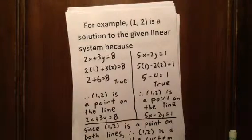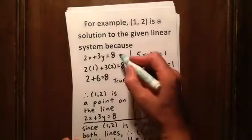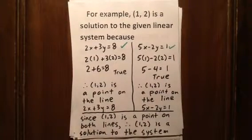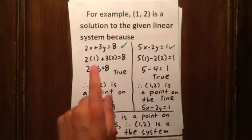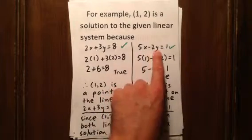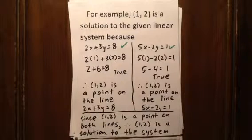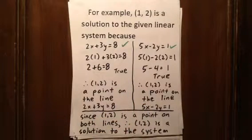For example, (1, 2) is a solution to the given linear system. Recall the system had two equations: 2x plus 3y equals 8 and 5x minus 2y equals 1. To show that (1, 2) is a solution, we plug in 1 for x and 2 for y in both equations. We get 2 plus 6 equals 8 — true. And in the second equation, 5 minus 4 equals 1 — also true. So (1, 2) is a point on both lines, and therefore a solution to the system.